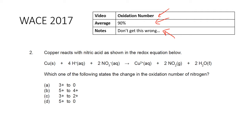Copper reacts with nitric acid as shown in the redox equation below. Which of the following states the change in oxidation number? We're just working out the oxidation number here. We have NO₃⁻, which is a polyatomic ion, so the sum of all its parts must equal its charge. Oxygen is negative two, so three oxygens makes negative six, and therefore nitrogen must be positive five.